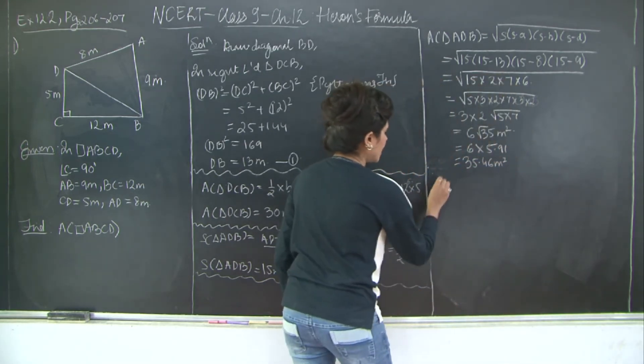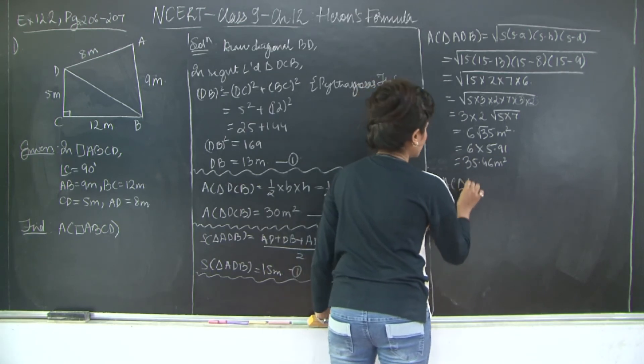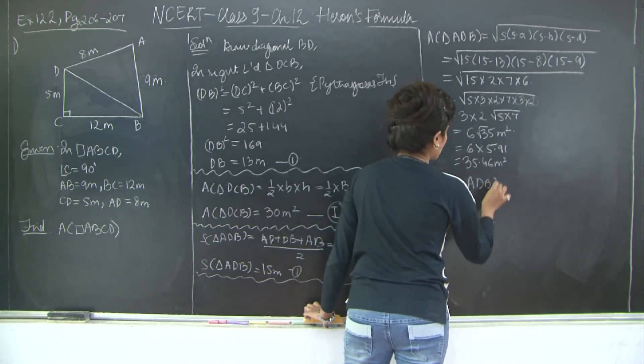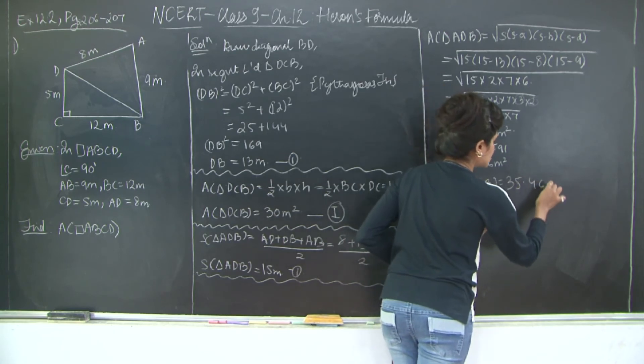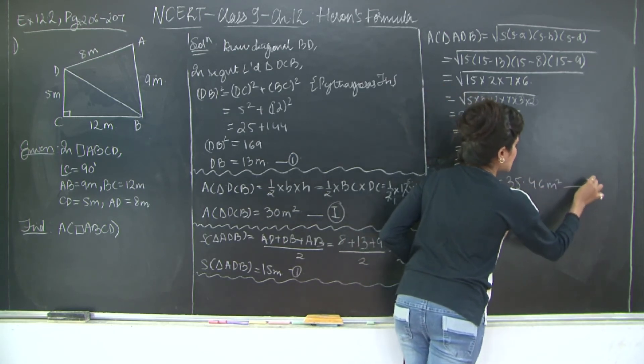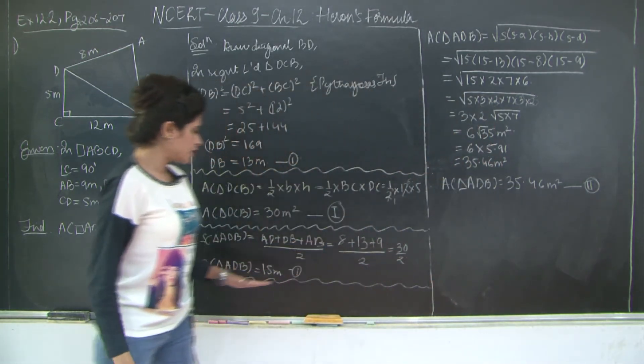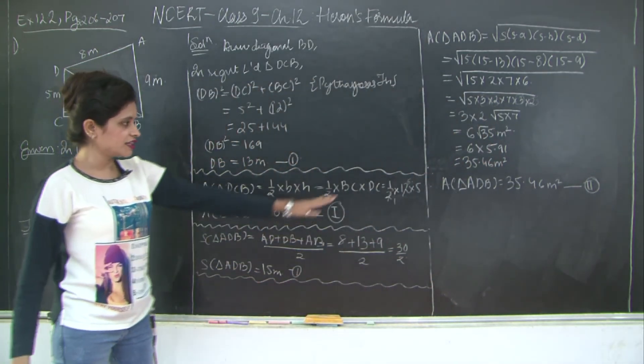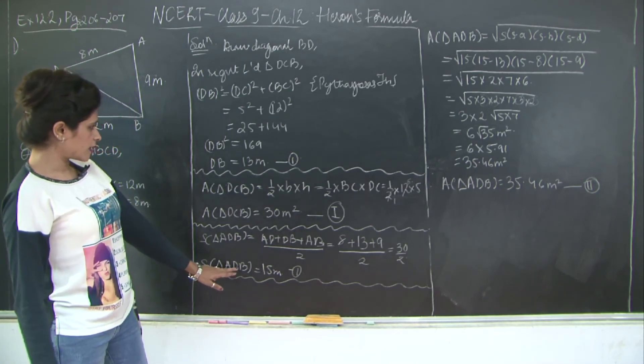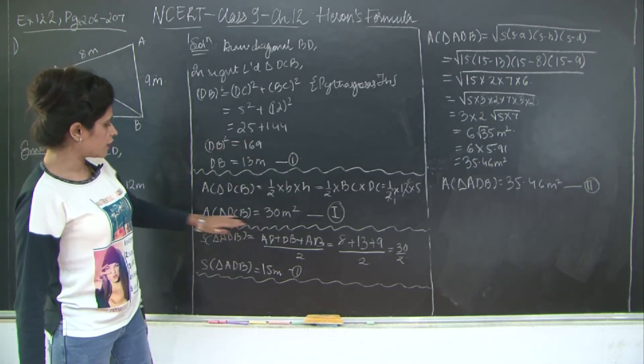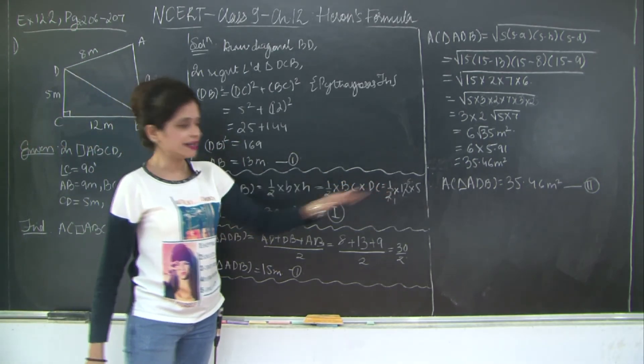So 6 × 5.91 = 35.46. So therefore I have area of triangle ADB is equal to 35.46 meter square and I will mark this as 2. So now the area of my quadrilateral is the sum of these two triangles, area of triangle DCB and area of triangle ADB.